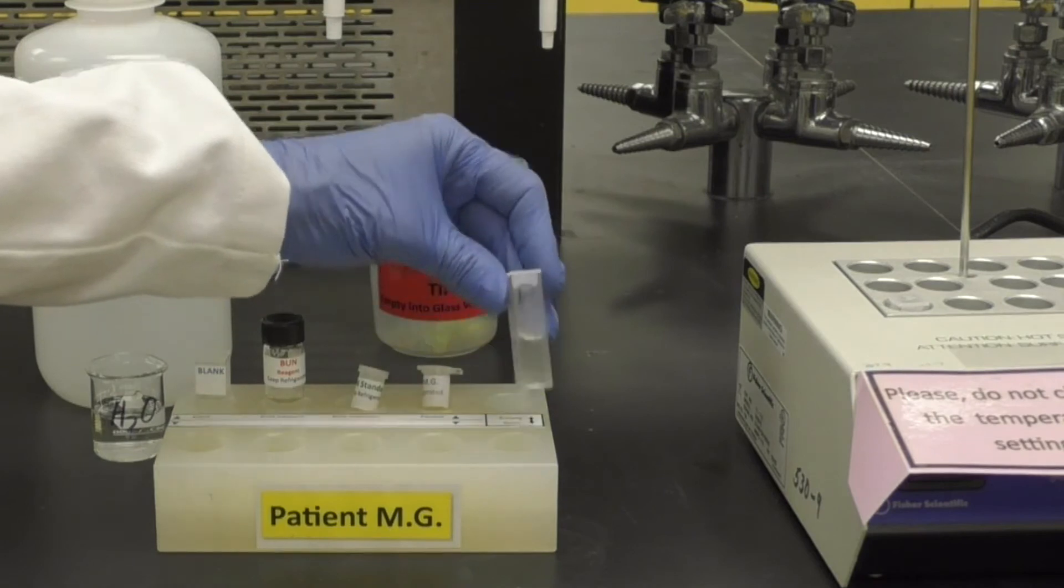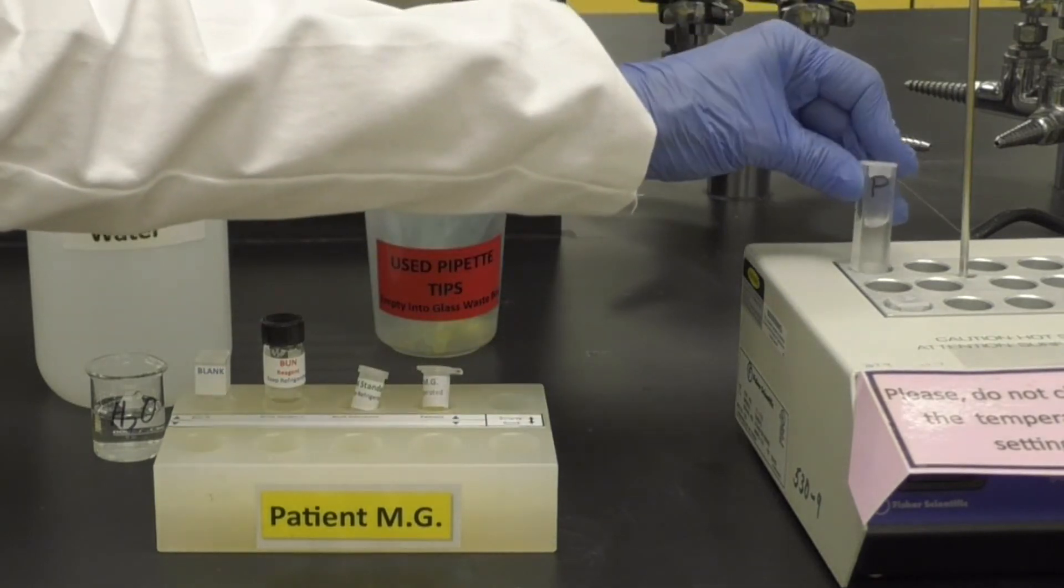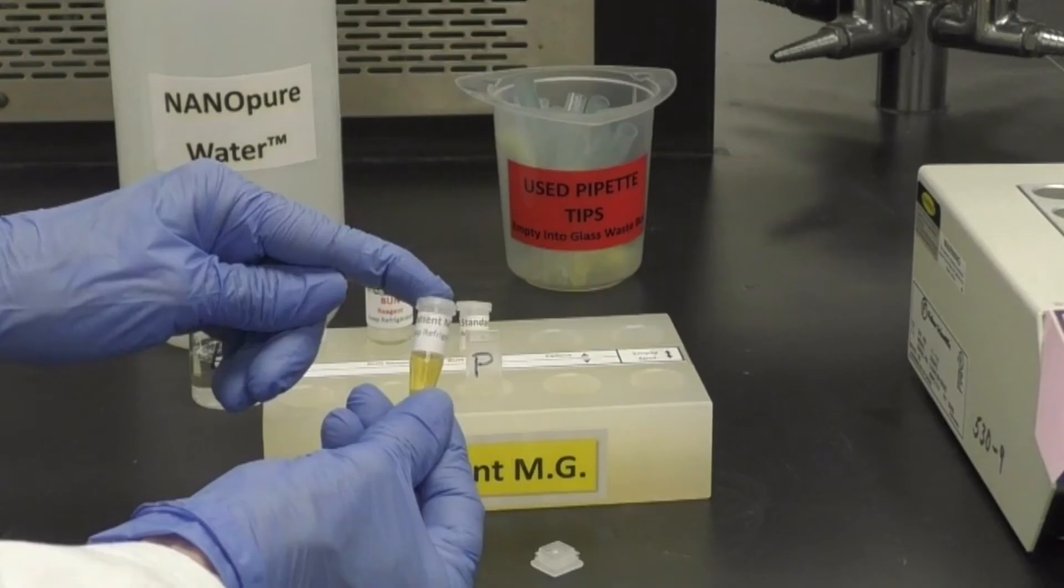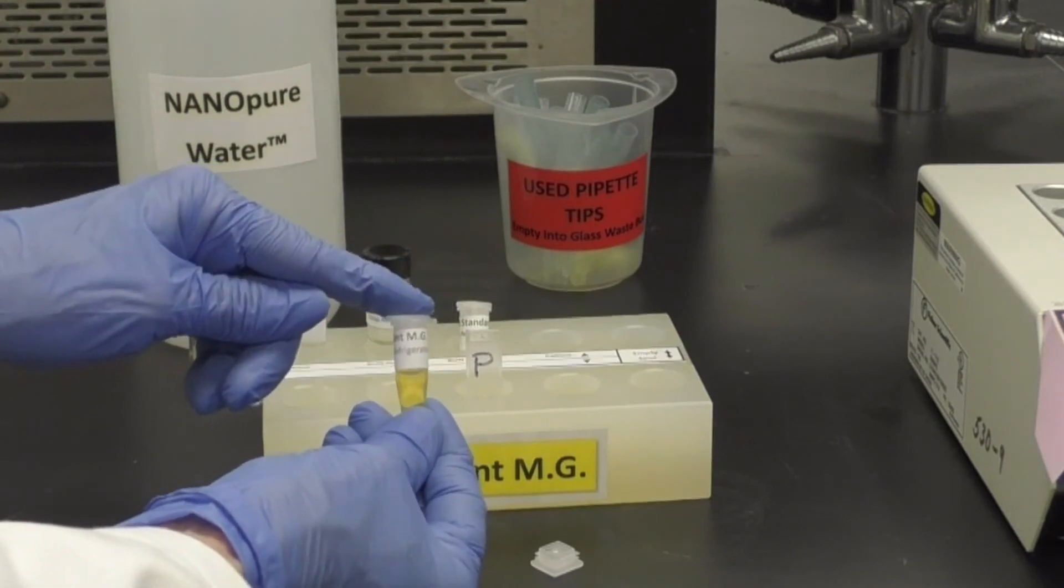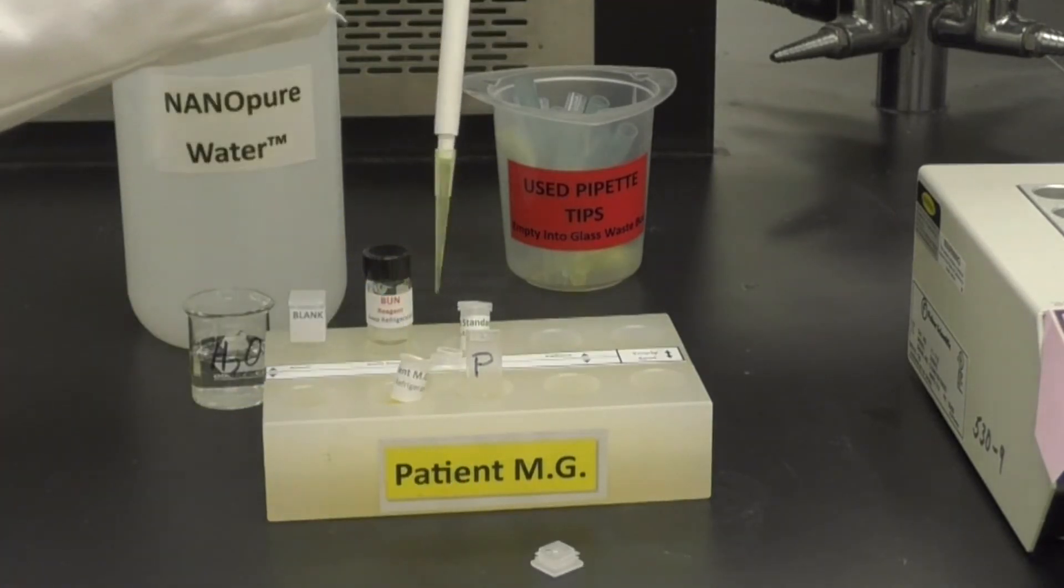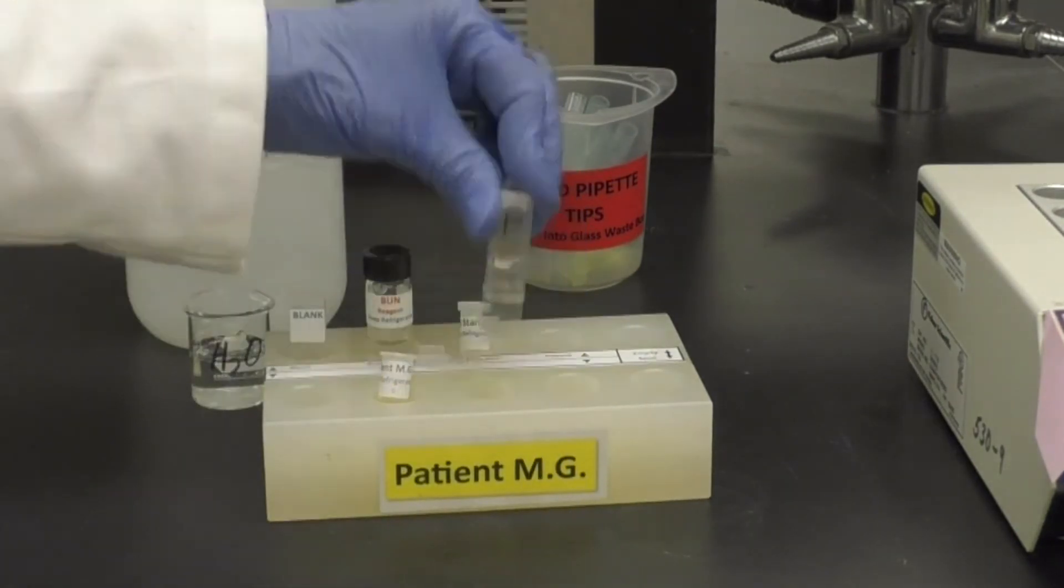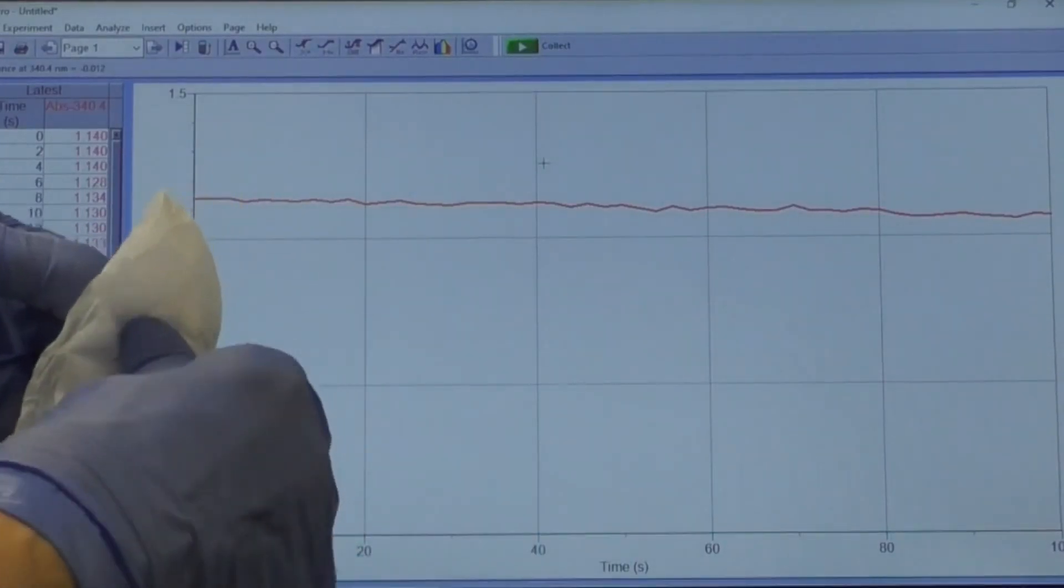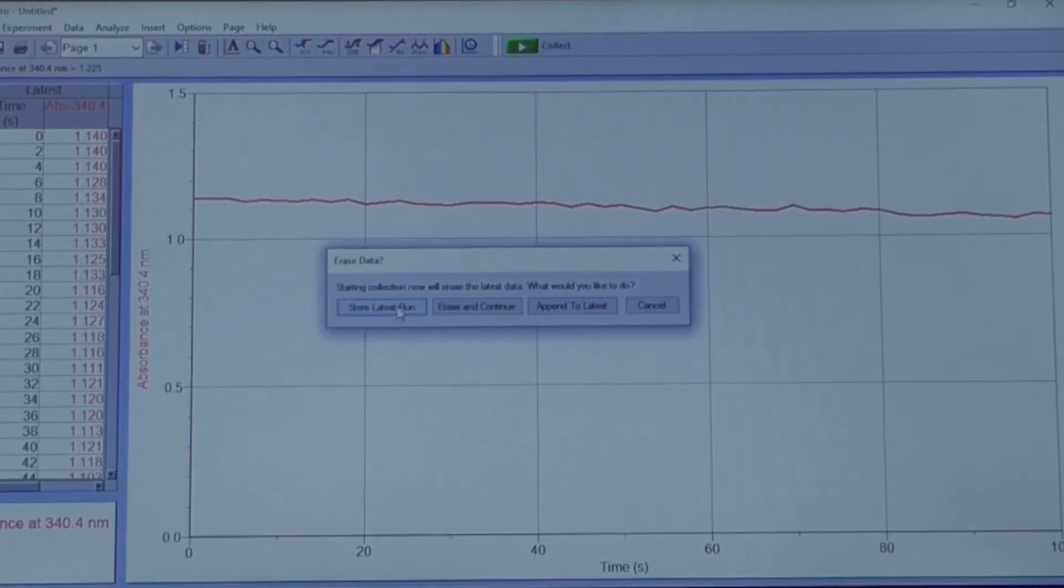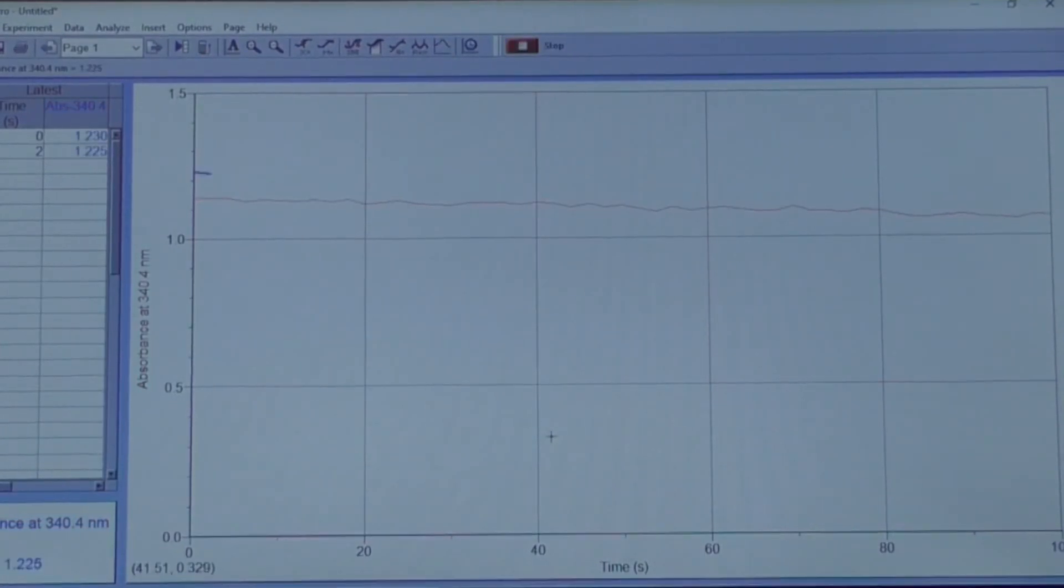While the standard is running, place the patient cuvette in the dry bath to warm for 5 minutes. When it is ready, add 20 microliters of the patient sample, rock to mix, wipe, place it in the spectrometer, and click Collect. Choose Store Latest Run. Again, do not click Stop.